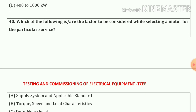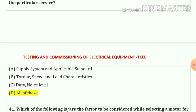Question number forty: Which of the following are the factors to be considered while selecting a motor for a particular service? So our answer is all of these — that means A, B and C also.